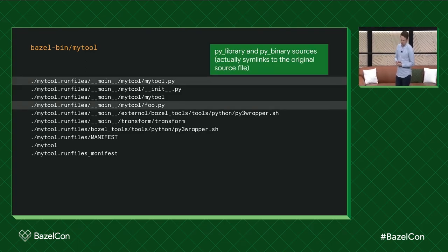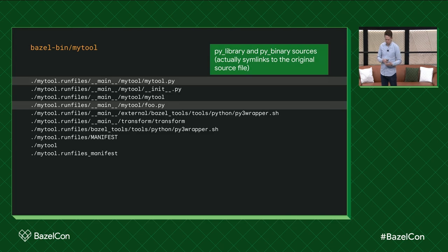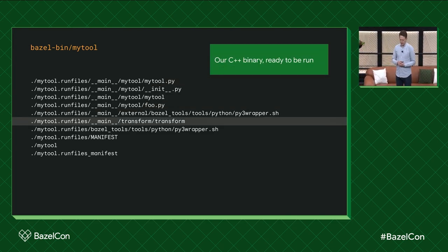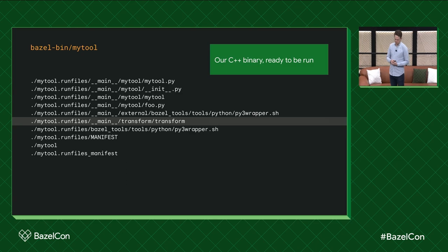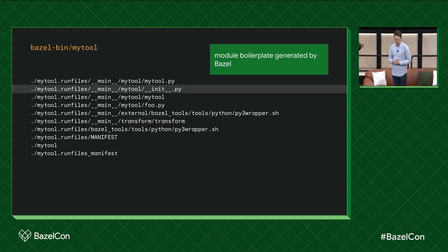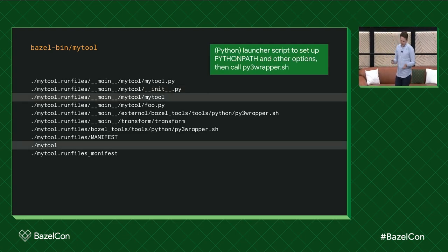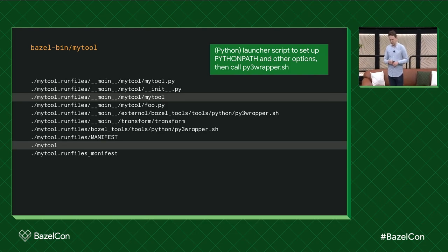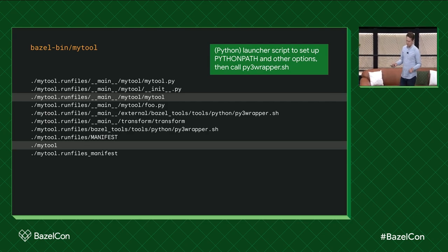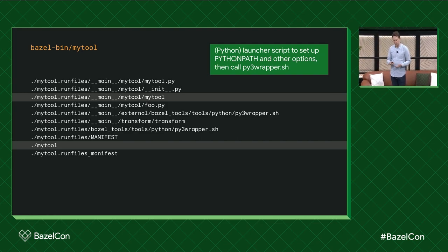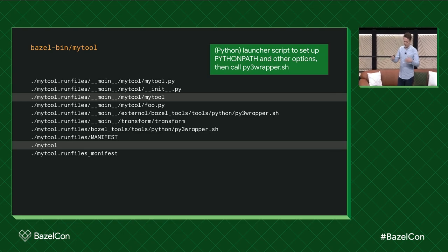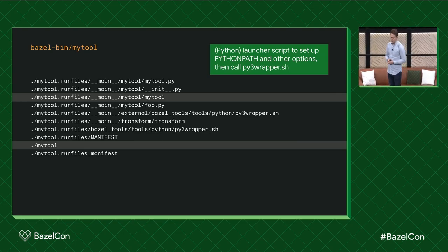There are a few interesting things in the output. We have symlinks to the original source files in the actual source repo, our data dependency which is a C++ binary compiled elsewhere and linked in, and some module boilerplate that Bazel generates. The actual MyTool binary is a launcher script generated by Bazel which does a few things, but the most important is it sets an environment variable called PythonPath, which is how the Python interpreter knows how to resolve imports. This is basically how Bazel constructs a tree of dependencies that the Python interpreter knows how to interpret.